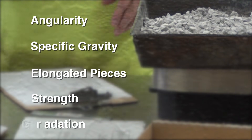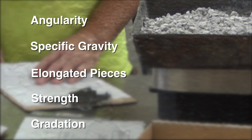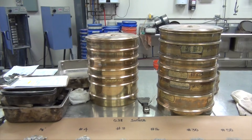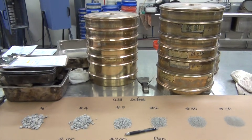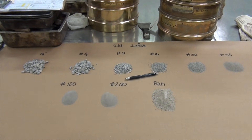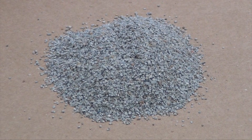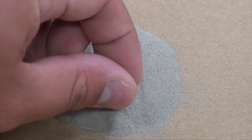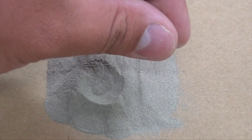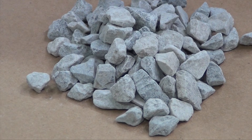Perhaps the most important aggregate test is to determine gradation. Gradation is a description of the different sizes of aggregate present within a sample. Some specifications require blends using all smaller aggregates, whereas other mixtures may utilize a blend of fine, medium, and coarse aggregate.